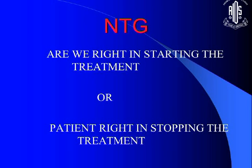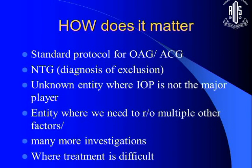Were we right in prescribing medicines, or was the patient right in stopping them? Why not just treat NTG like normal open-angle glaucoma? Ladies and gentlemen, normal tension glaucoma is a diagnosis of exclusion. You have to perform many additional tests — hyperviscosity workup, carotid Doppler, MRI — which you would not do in a routine open-angle glaucoma case. The patient is spending money, so you must be clear what you are dealing with. This is something totally different.